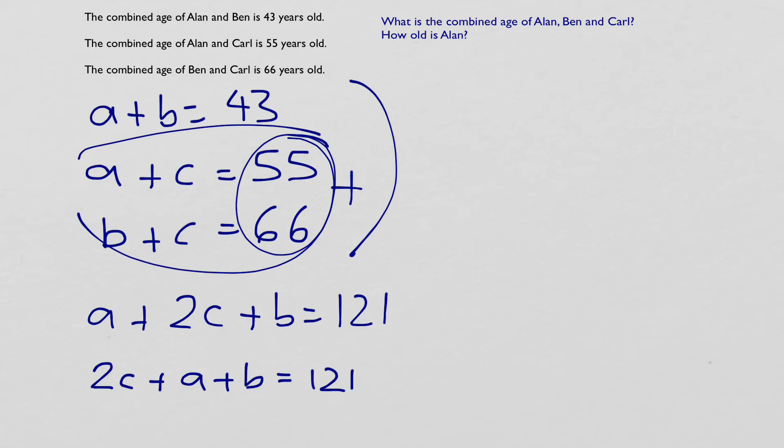So instead of writing a plus b, I can just write 43 instead. So my equation now is 2c plus 43 equals 121. Do a bit of calculation, and we can work out that 2c is 121 take away 43, which equals 78. So then 1c equals 39. So Carl is 39 years old.